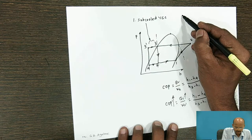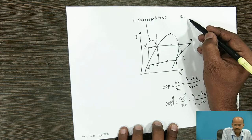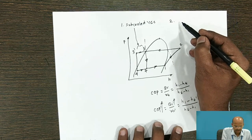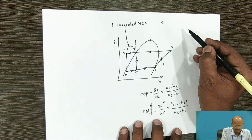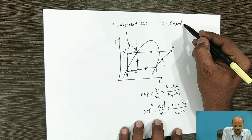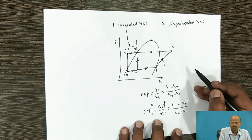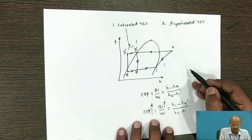Second type of increase in the COP method is superheated VCC, superheated vapor compression circuit.